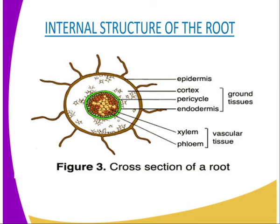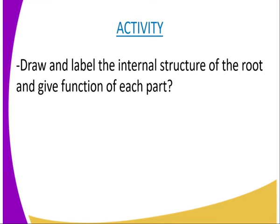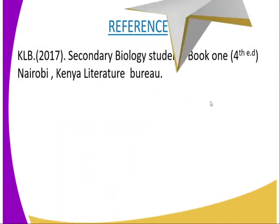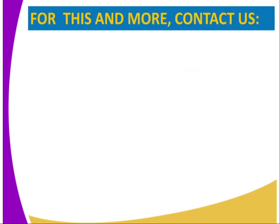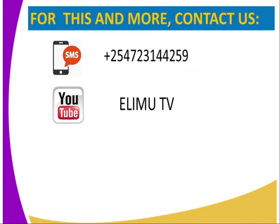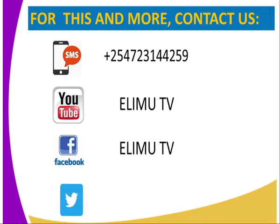Having done that, we are going to have the following activity: you are required to draw and label the internal structure of the root and give the function of each part as we have seen in our lesson. For more information, you can refer to KLB Secondary Biology Student's Book, Form 2, fourth edition, Kenya Literature Bureau, Nairobi. You can also contact us by sending an SMS to the number on the screen, subscribe to our YouTube channel Elimu TV, our Facebook page Elimu TV, or send us a message on Twitter at Elimu TV underscore Kenya. Thank you for watching — please subscribe to have more and more lessons. Thank you.